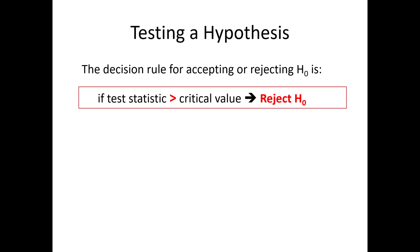The decision rule in all statistical tests is that if the test statistic, based on the data, is greater than the critical value, you must reject H0.